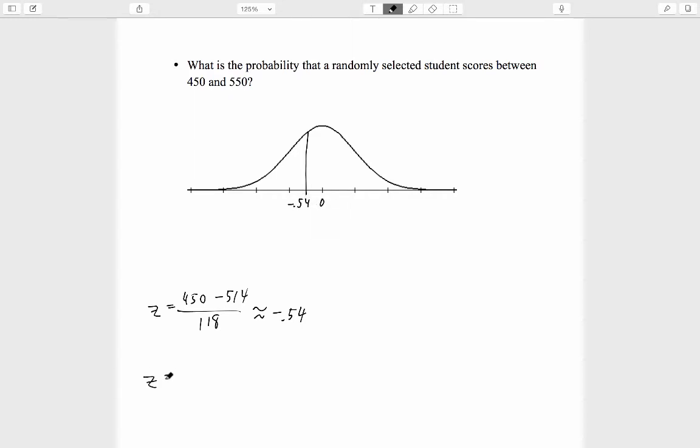And then for 550, which is a little bit above the mean, we're going to have a z-score of just 0.31 approximately. This is not a very wide range of scores, but because of the way normal distributions work, because of how clustered they are about the mean, this is actually going to turn out to have a fairly substantial probability compared to how narrow the range is.